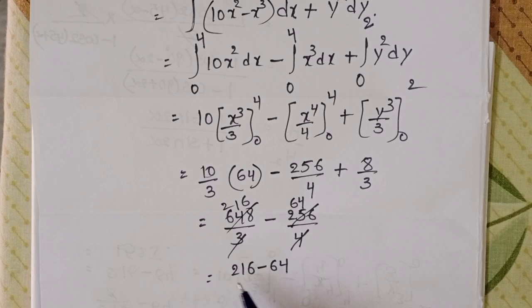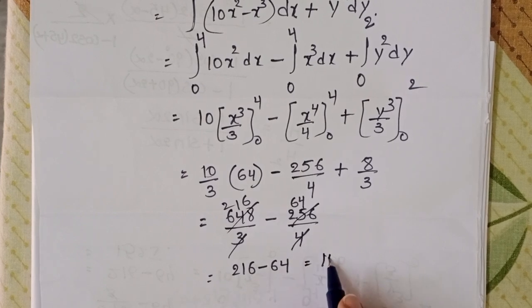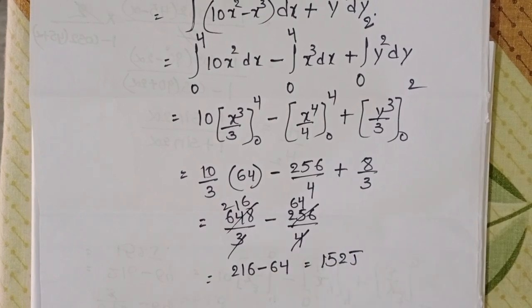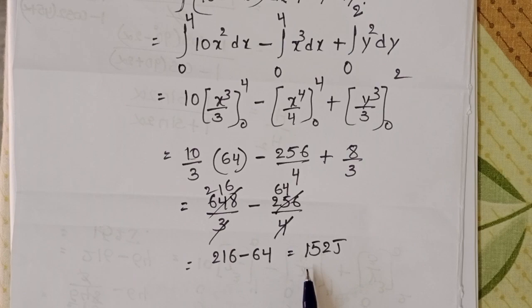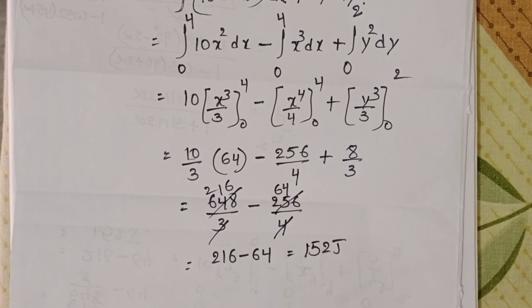216 minus 64 equals 152 joules. The work done by the force is 152 joules.